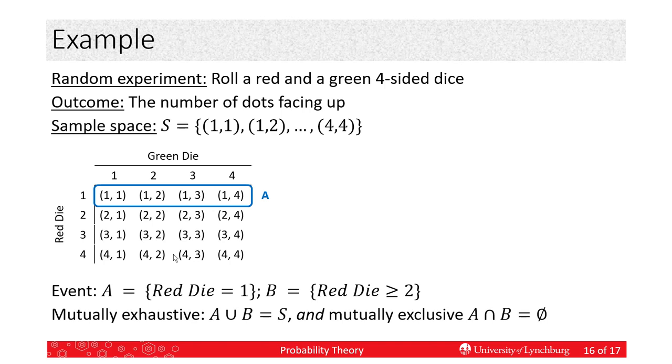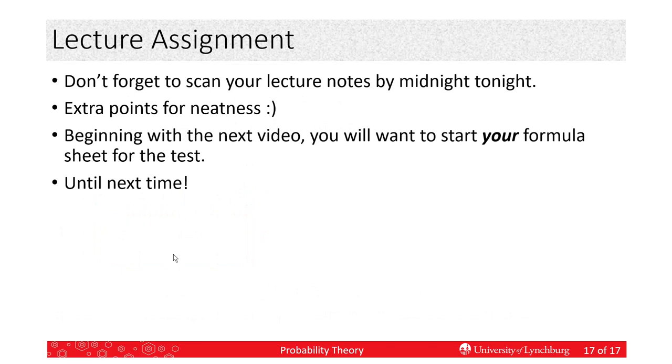So, now let's redefine B as the red die is two or higher, a value of two or higher. If we take the union of A and B, it's still equal to S, so it's mutually exhaustive. But notice that now the intersection A and B is empty, so they're also mutually exclusive. So, mutually exclusive and mutually exhaustive sets A and B here.